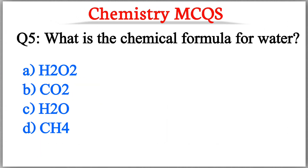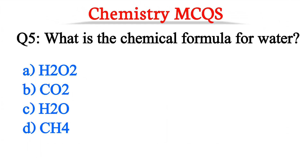Question number 5. What is the chemical formula for water? The correct option is option C, H2O.